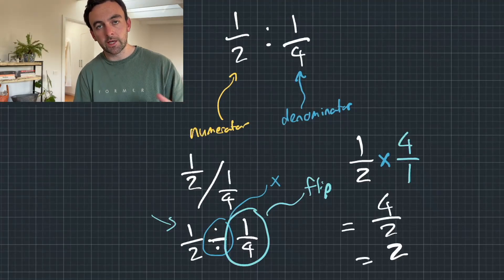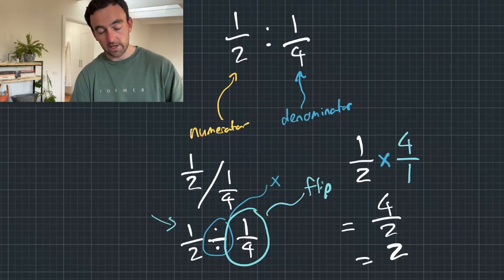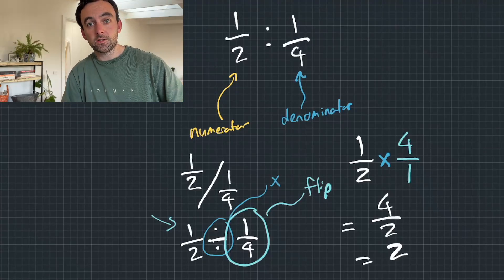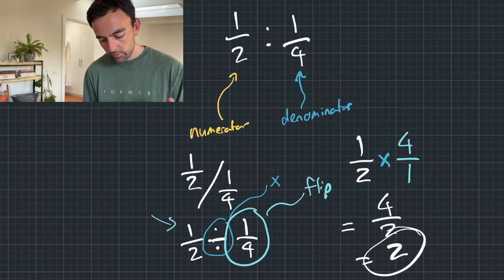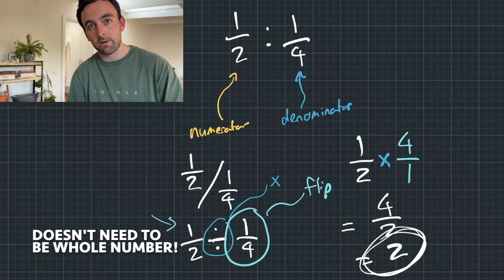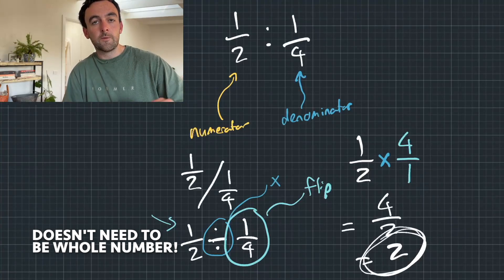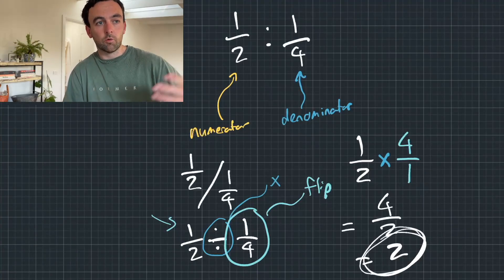So anytime you get a question like that in the GAMSAT, the key is just to identify what goes on the left, what goes on the right, and then just divide the two numbers and whatever whole number comes out.